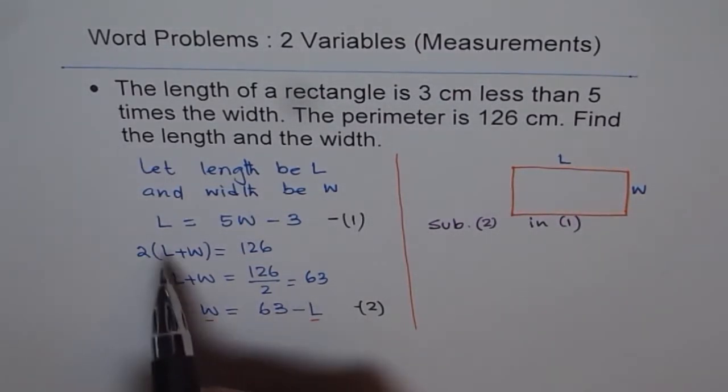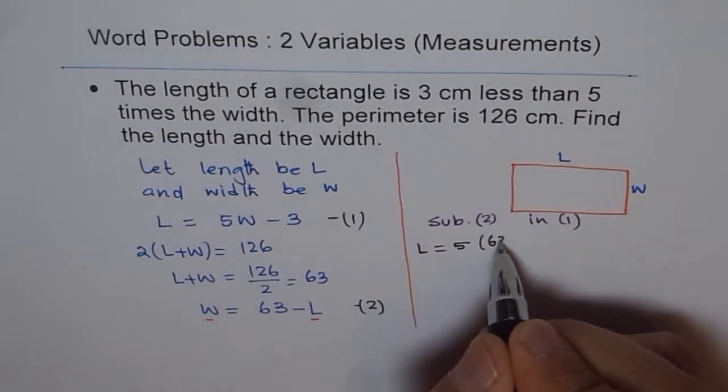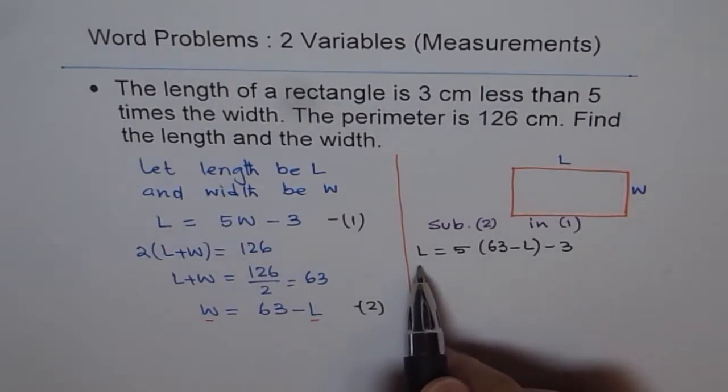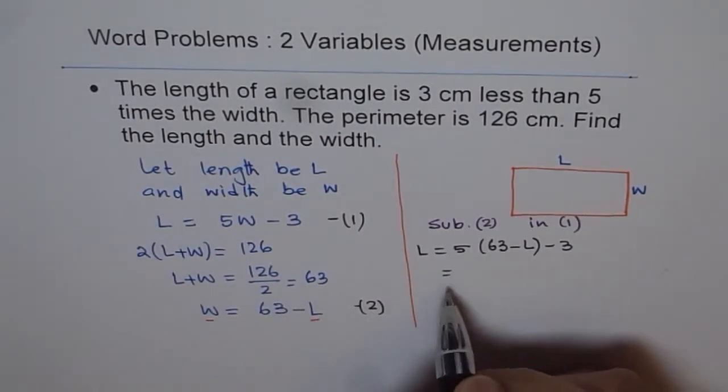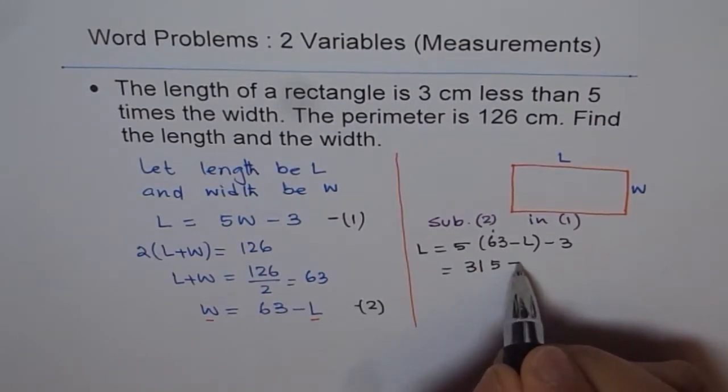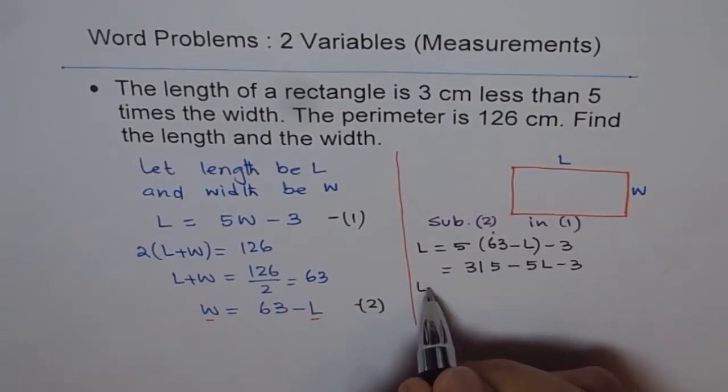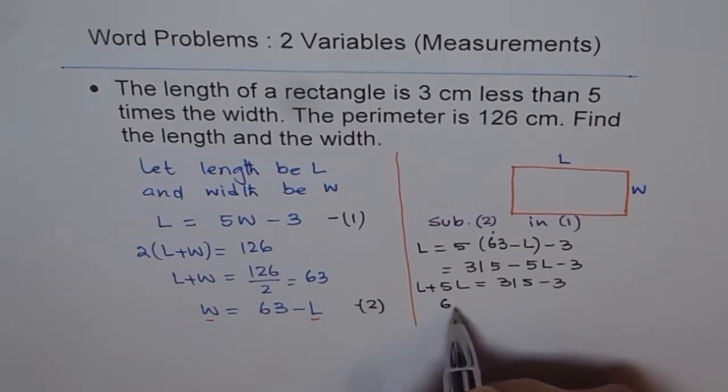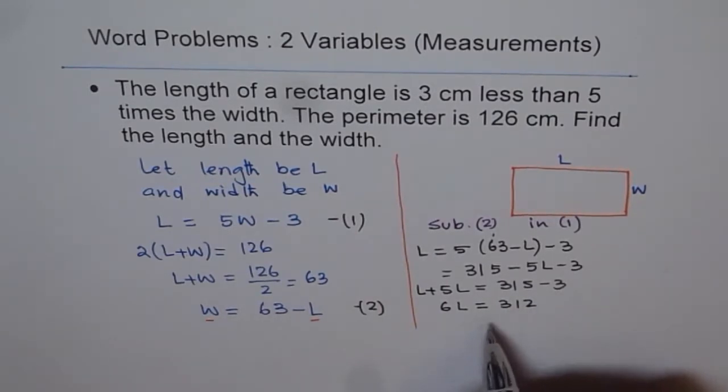So after we do substitution what do we get? We get length equals to 5 times W is 63 minus L minus 3. So now we get our equation which is only in one variable L. Let's expand this and simplify. So 5 times 63, 5 times 3 is 15, 5 times 6 is 30, and 1 gives us 315 minus 5 times L minus 3. Let's bring variables on one side. So it becomes L plus 5L equals to 315 minus 3, or 6L is equal to 312. That is 315 minus 3. So from here we can calculate length.